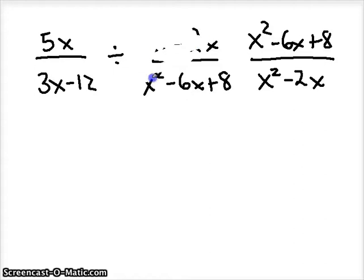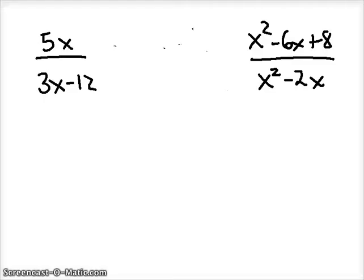So let's get rid of this and this, and now say that we are multiplying. All right, so again, back to where we were in the last video. Now that we are multiplying, we can factor, cancel out common factors, and multiply whatever is left over.